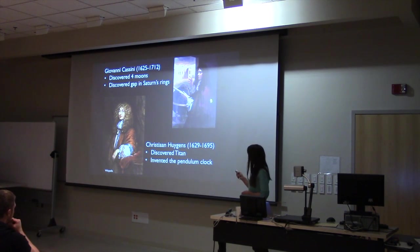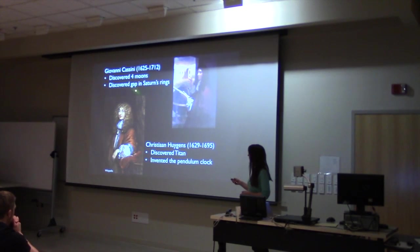Giovanni Cassini is important for Saturn because he discovered four of the moons. He was the first one to look carefully and observe four moons orbiting around Saturn. He also discovered a gap, the biggest gap that we can observe in Saturn's rings.